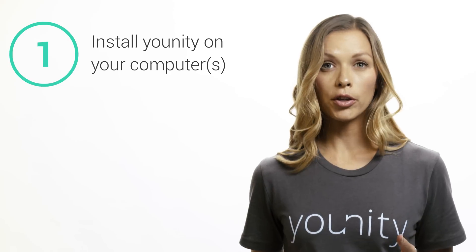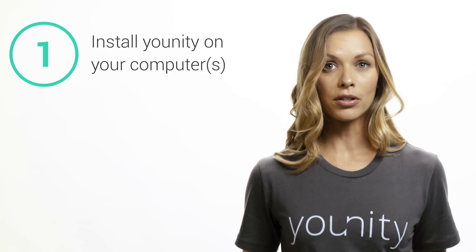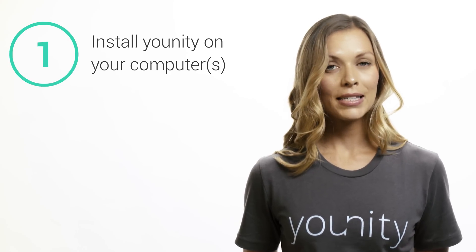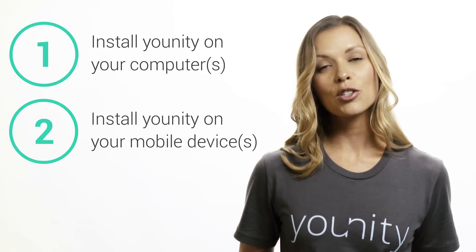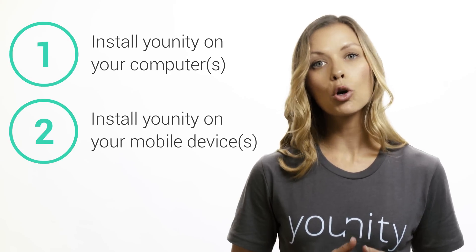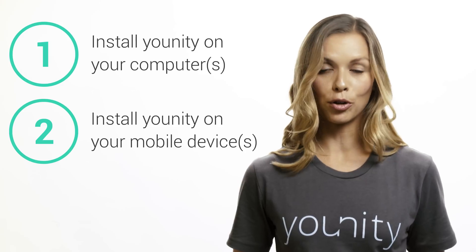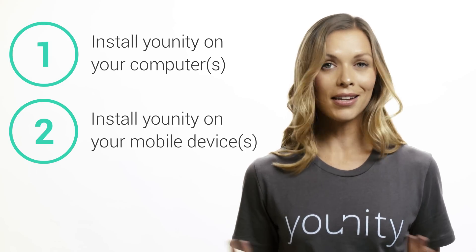So let's talk about how to set up Unity. It's a simple two-step process. Step one, you're just going to install Unity on your computers and let it index your files. Step two, install Unity on your mobile devices and let it connect to your computer. And that's it!